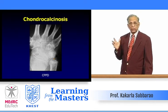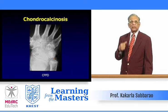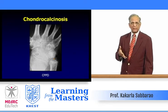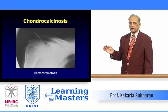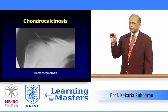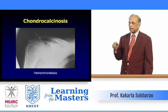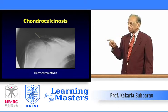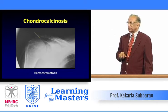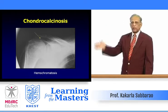CPPD is called pseudogout because clinically it resembles all the symptoms of gout. Calcification may occur in the hyaline cartilage as well — earlier we saw fibrocartilage involvement in the pubic symphysis and distal ulna; here it is the hyaline cartilage that is calcified. This case represents hemochromatosis or alkaptonuria.